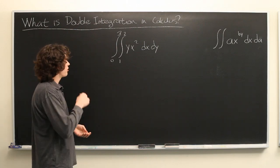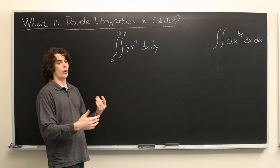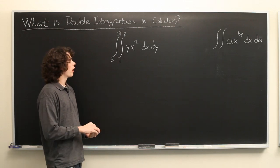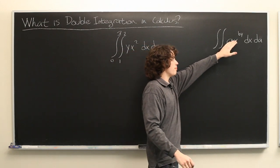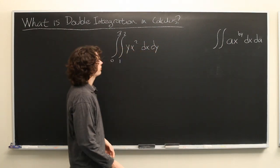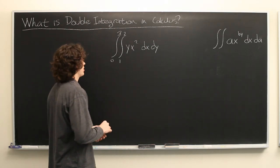But more generally a double integral is when you take a function with more than one variable. In this case we have y and x. Here we have a, b, x and y. And then you integrate it iteratively. And we'll see what that means in a second.